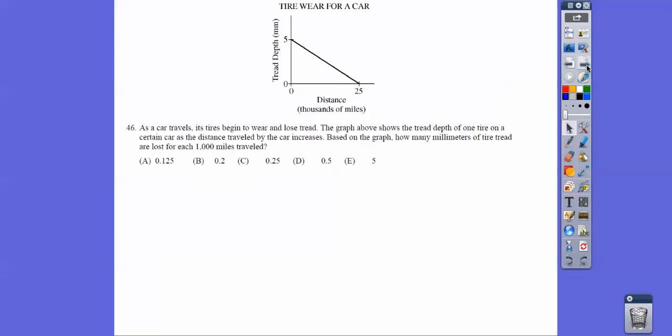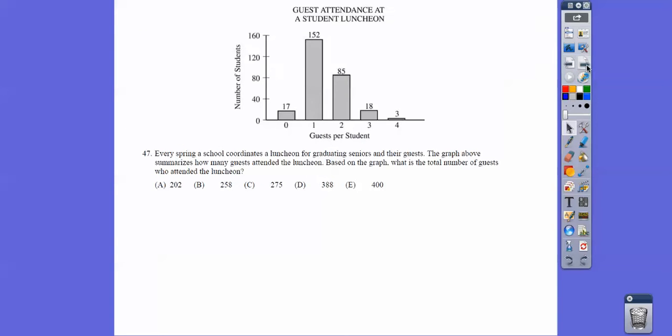As a car travels, as tires begin to wear and lose tread, the graph above shows the tread depth of one tire of a certain car as the distance traveled by the car increases. Based on the graph, how many millimeters of tire tread are lost for each 1,000 miles traveled? So this is a slope issue. The slope is down 5 to the right 25, which is negative 1 fifth, which is negative 0.2. So for each 1,000 miles, it loses 2 tenths of a tread.